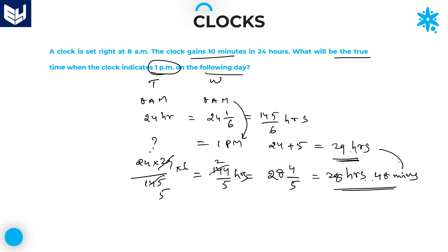The difference is 12 minutes. The true time is 12 minutes before 1 PM, which means 12:48 PM on the following day. This is the true time. So this concludes the clocks topic. I hope you understand and enjoy the session. Thank you very much for watching.